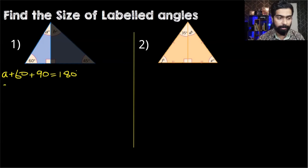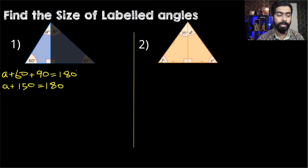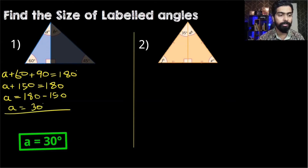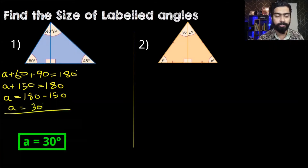Now let's add up these two numbers: 60 plus 90 is 150, so A plus 150 is equal to 180. Subtracting both sides by 150, we have A is equal to 180 minus 150, therefore the value of A is equal to 30 degrees.